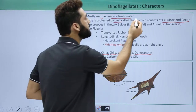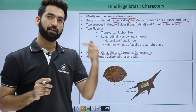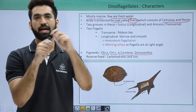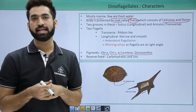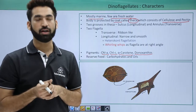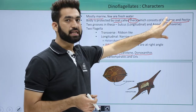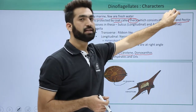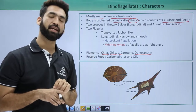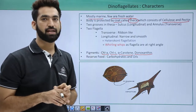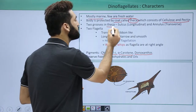The cellulose and pectin form a thick coat around the body called the theca. The theca protects the dinoflagellate from mechanical injuries. So remember that the body of dinoflagellates remains surrounded by this thick coat called theca, which is manufactured from cellulose and pectin.